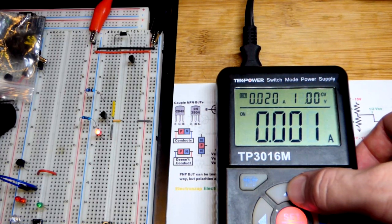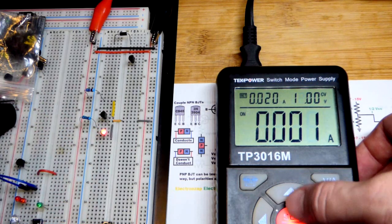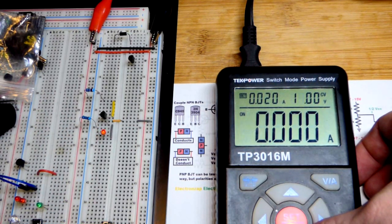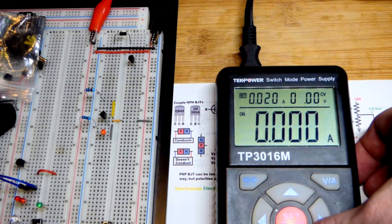There you can see, it's lighting. And I think it's lighting up more than the 2N3904 did, because it has a lower breakdown voltage from emitter to base.